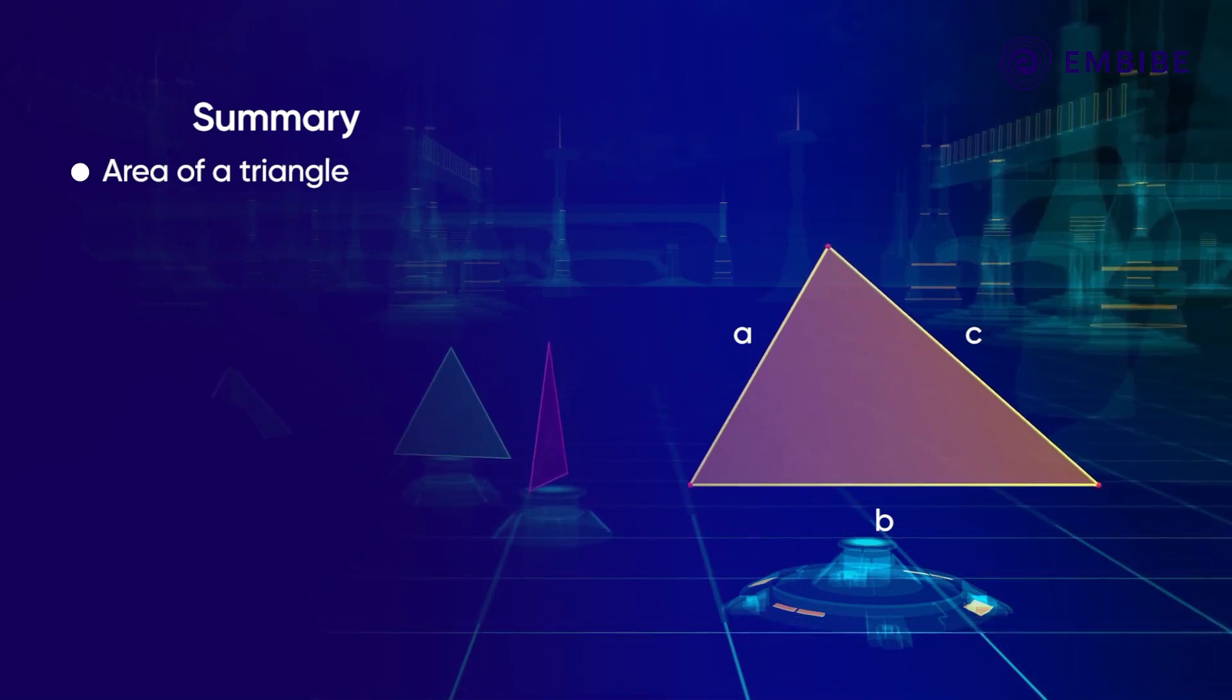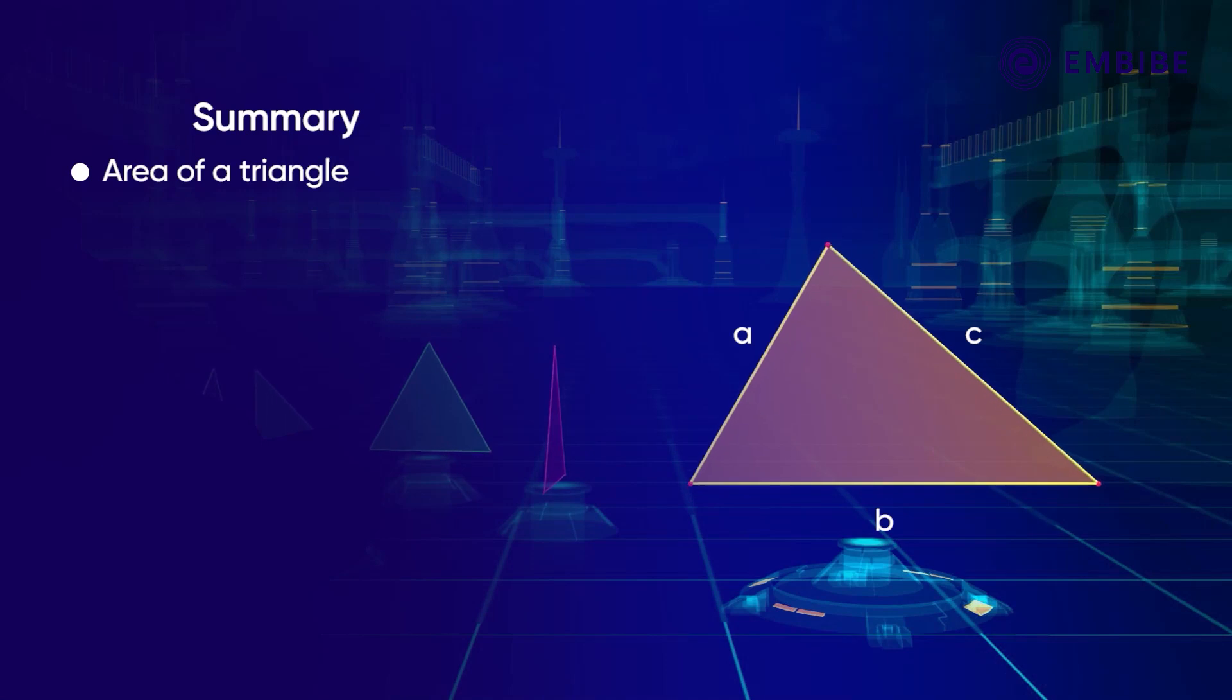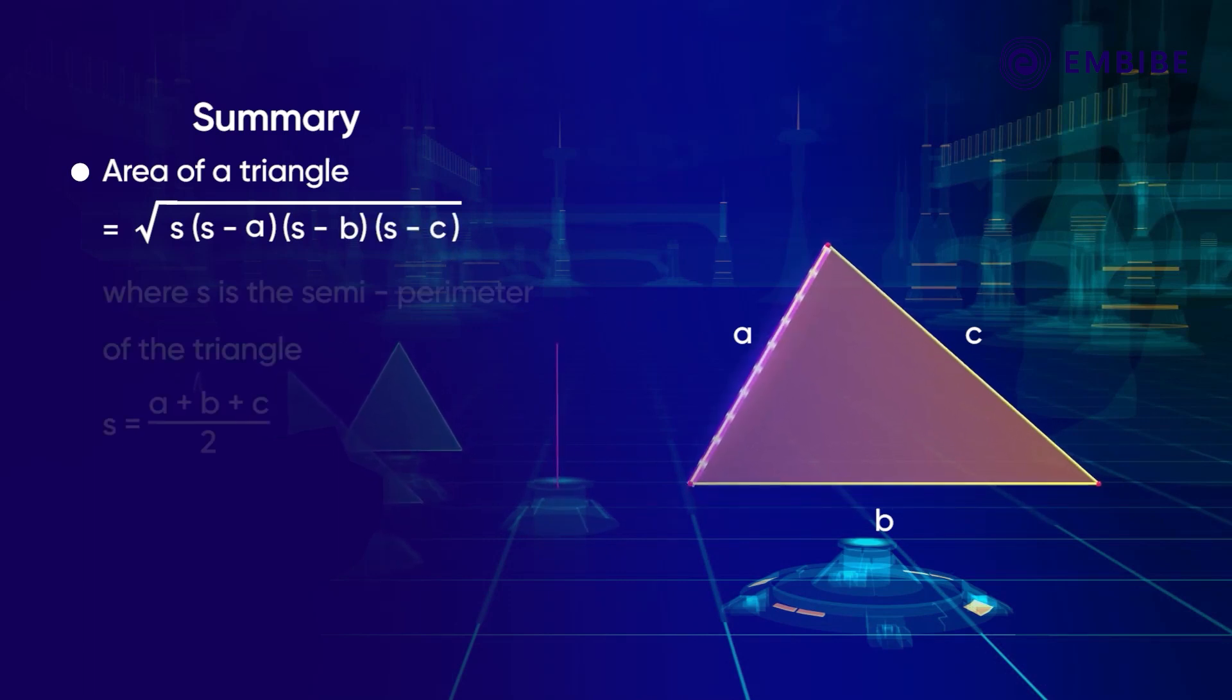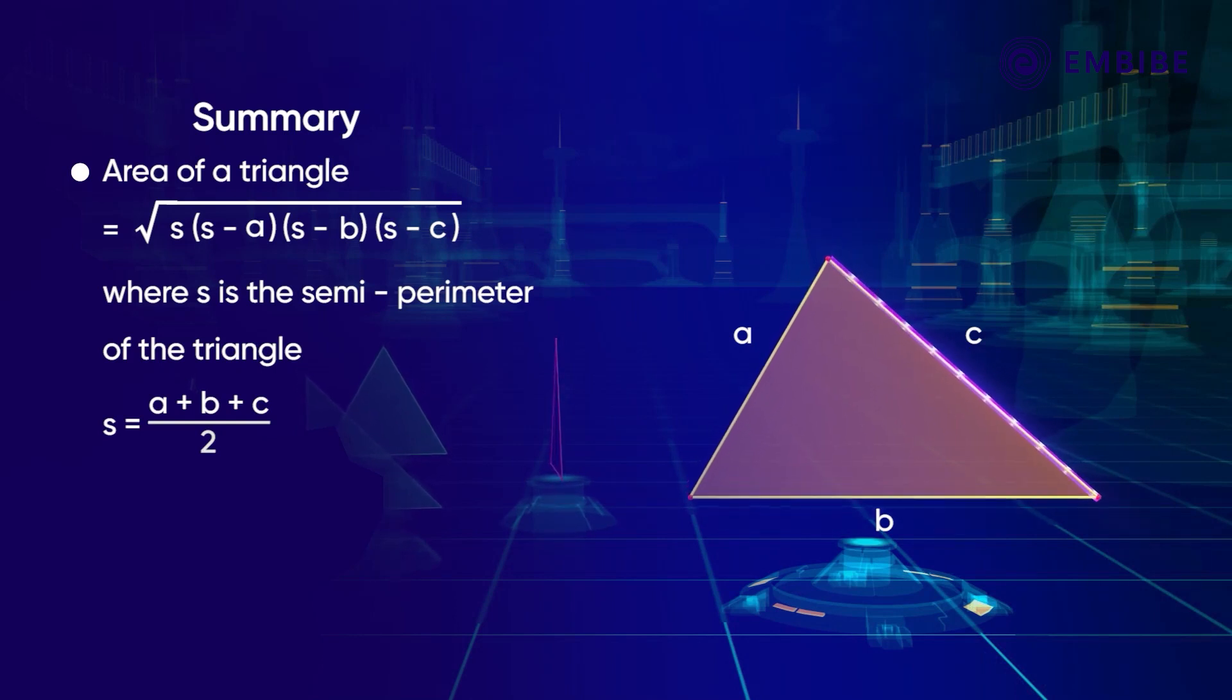According to Heron's formula, the area of triangle with side lengths A, B, and C is equal to under root of S into S minus A into S minus B into S minus C, where S is the semi-perimeter of the triangle.